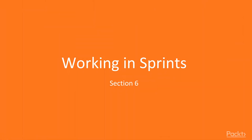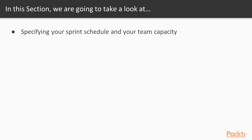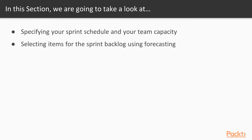In this particular section, Section 6, we're going to talk about working in sprints. We're going to take a look at specifying your sprint schedule and your team capacity. We're going to talk about selecting items from the backlog or the sprint backlog and using forecasting to help you. Composing requirements into tasks — now that we have our backlog items, we need to break them down.